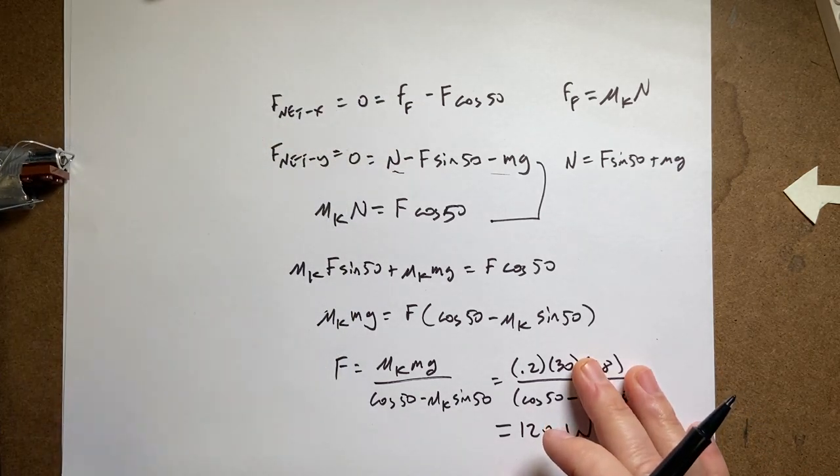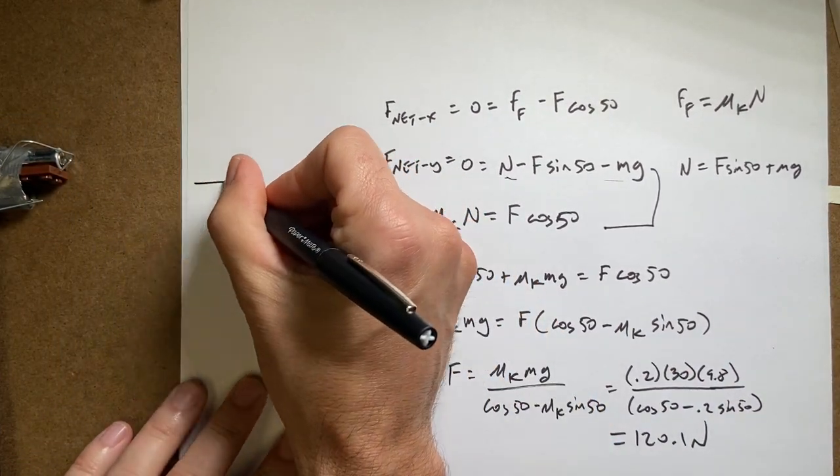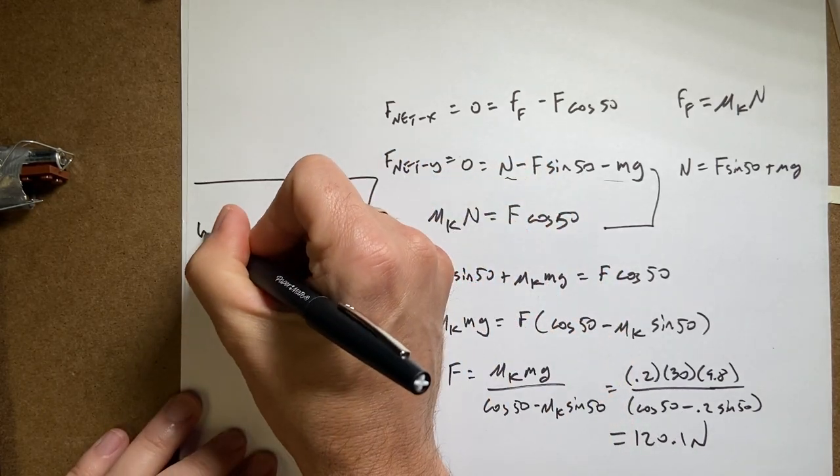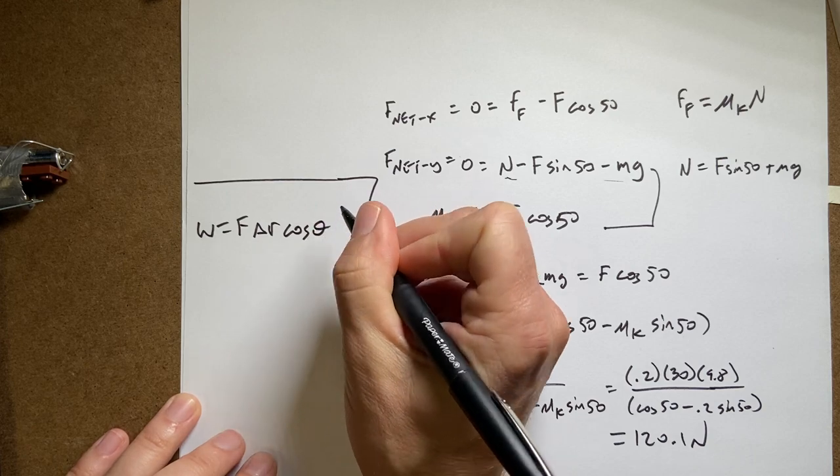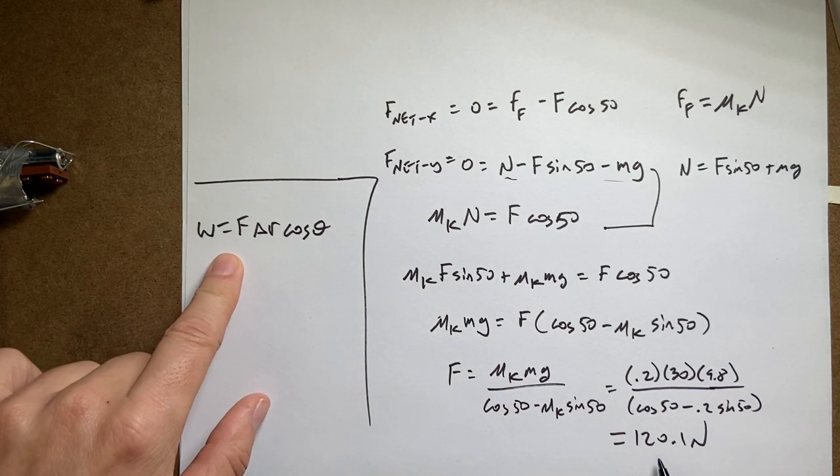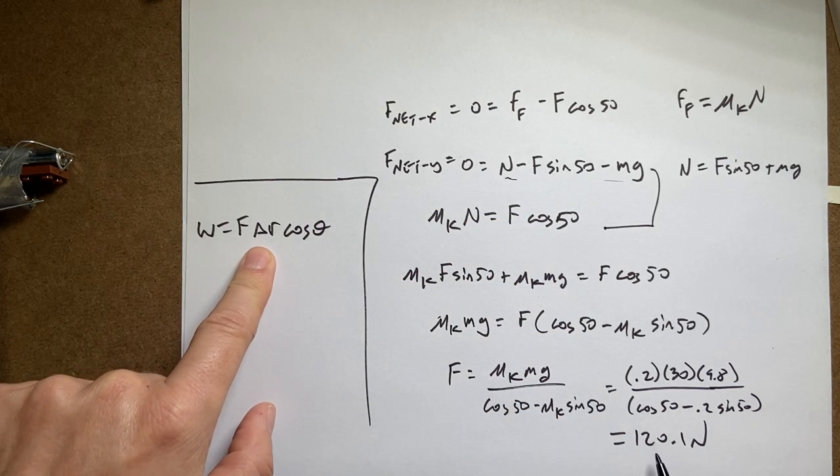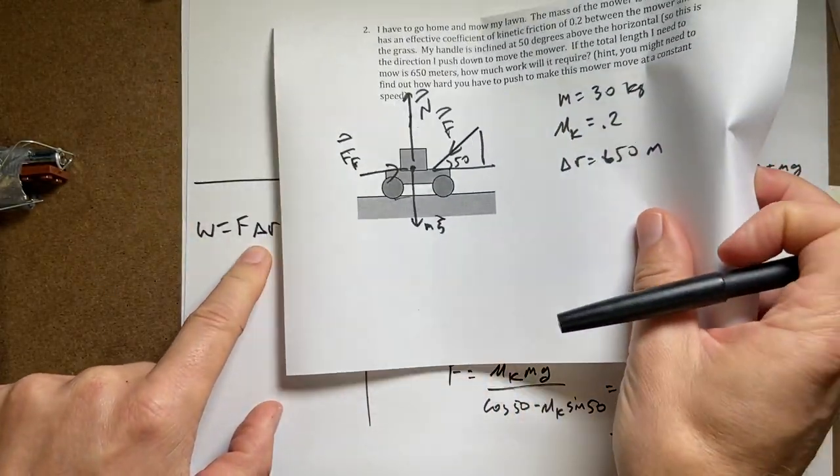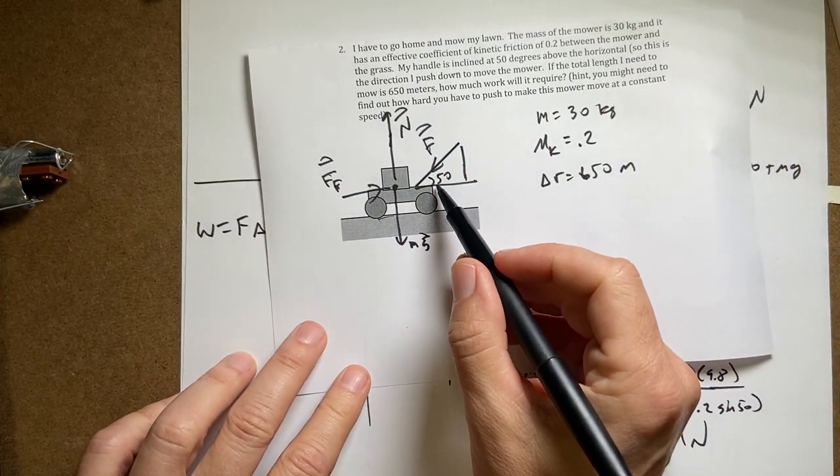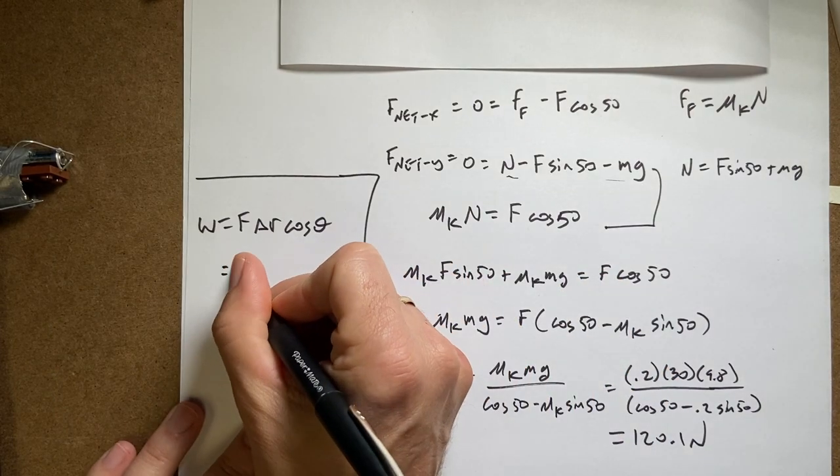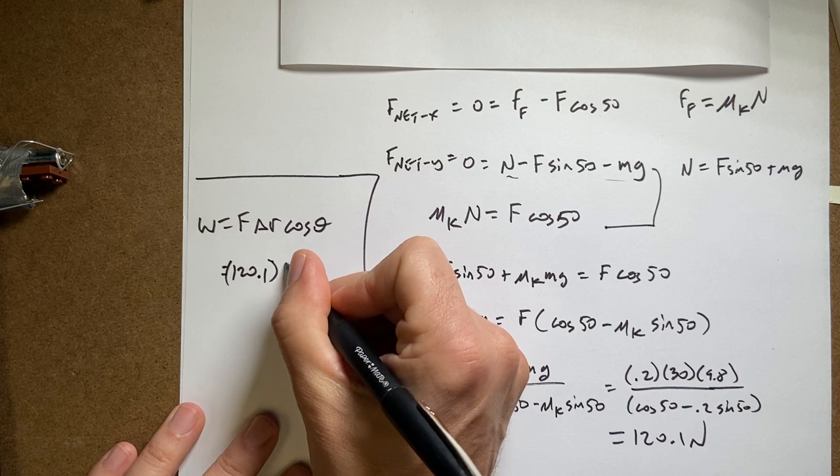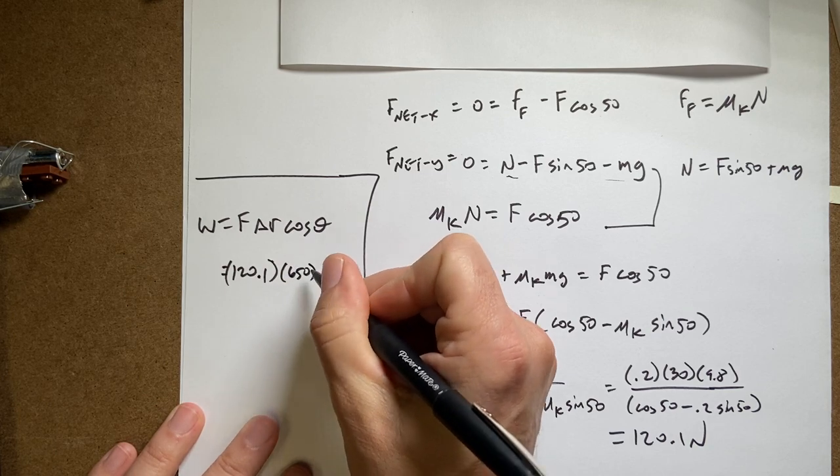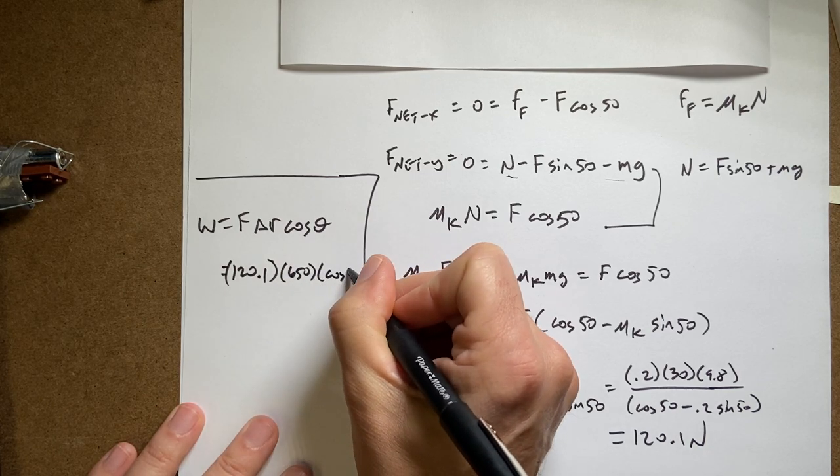We are not done. We are not done, right? Because now I need to calculate the work. Work is f delta r cosine theta. So now I know f, delta r was 650 meters. And theta is going to be 50 degrees. So this is going to be 120.1 times 650 times cosine of 50.